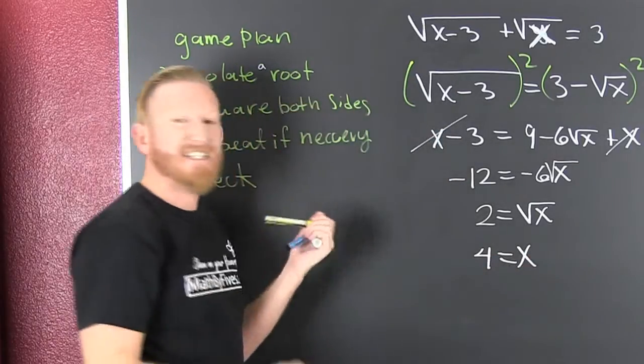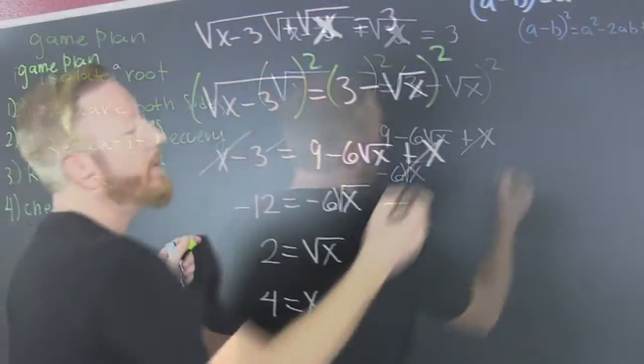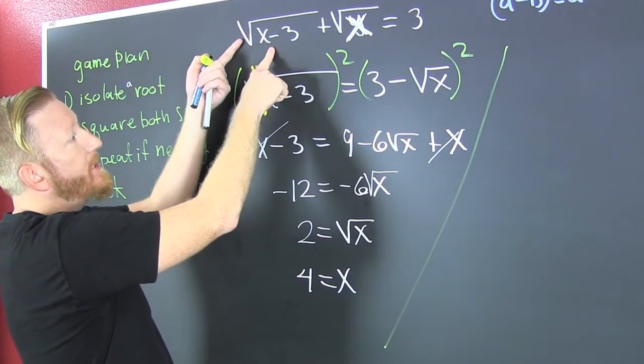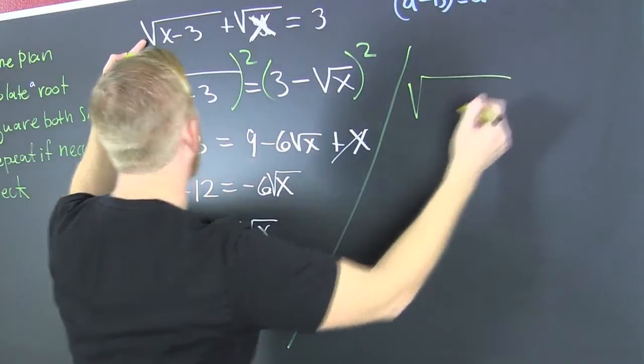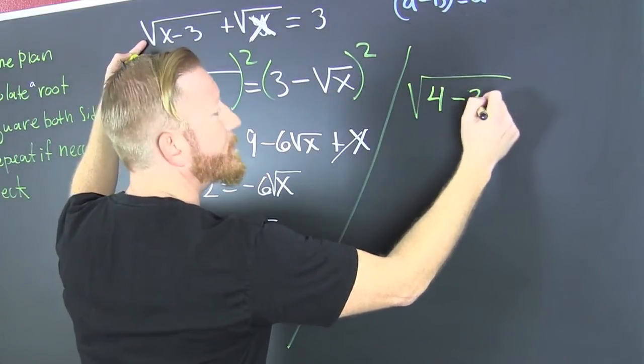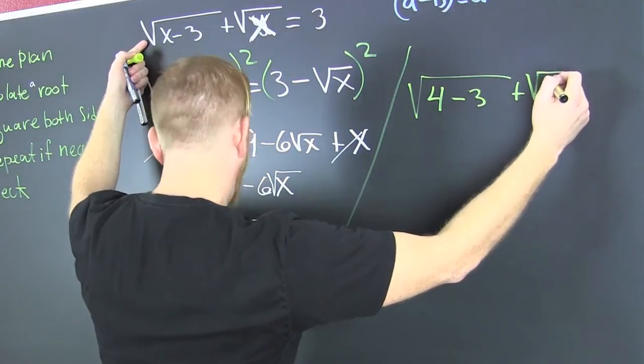What's next? Check it! We're gonna check to make sure we don't have any extraneous solutions. So I'm gonna plug it back into the original: the square root of 4 minus 3 plus the square root of 4.